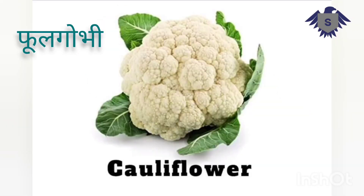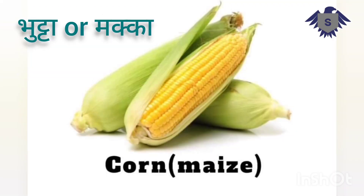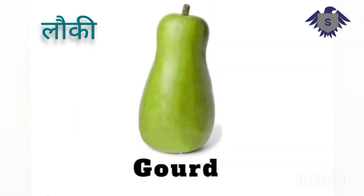Cauliflower — Phool Gobhi. Bean Curd — Tofu. Corn or Maize — Bhutta or Makka. Gourd — Loki.